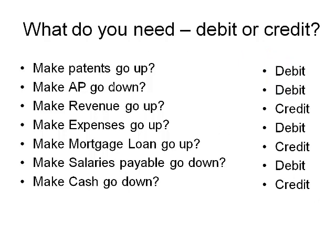How did you do? A patent is an asset. Accounts payable is a liability. Revenues go up with a credit. Expenses go up with a debit. A mortgage loan is an obligation — that's a liability. Salaries payable is another liability. Cash is an asset. Until you know the type of account you have, it's hard to decide whether to make a debit or credit to get the balance movement you need.